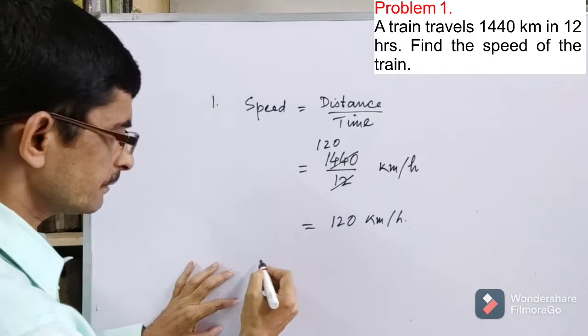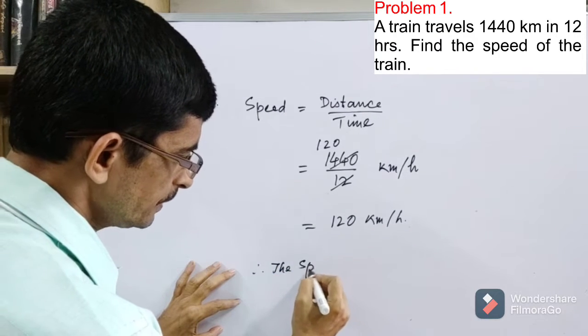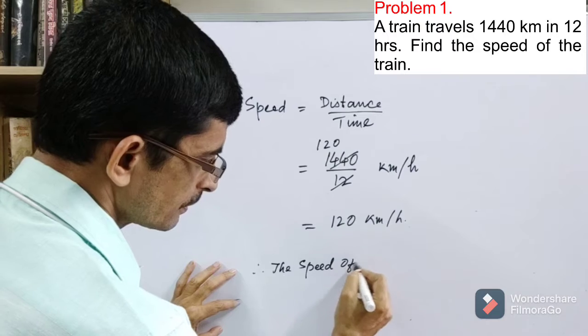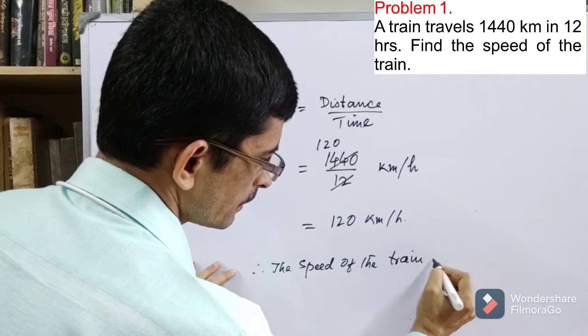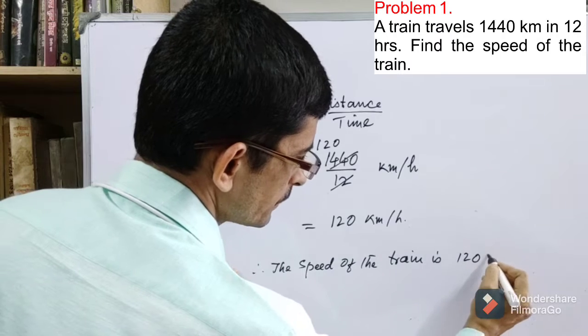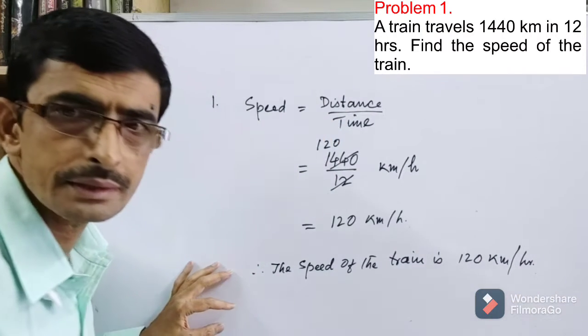So write the final answer. Therefore, the speed of the train is 120 kilometer per hour. That's it.